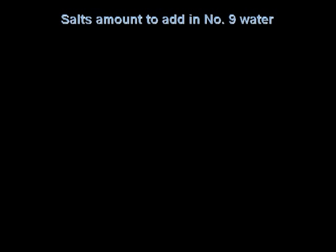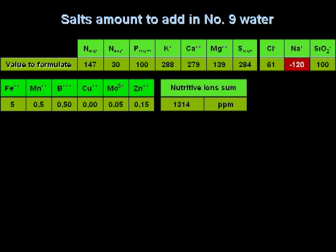If we want to prepare the same formula using water number 9, logically, figures vary somewhat. This water has a high sodium ion content, too much considering our desired formula design. It could be used only for sodium tolerant plants, but very carefully, and results will not be optimal.